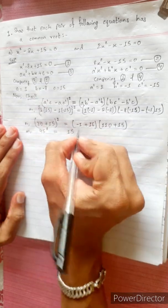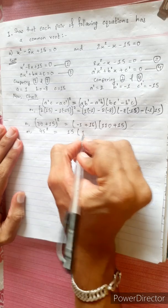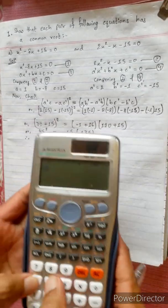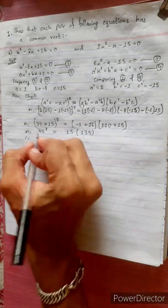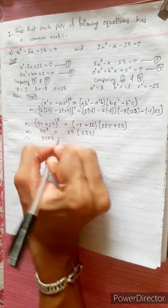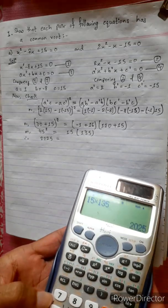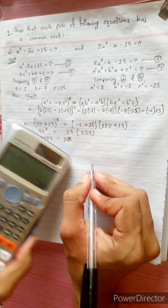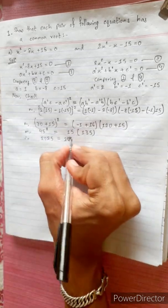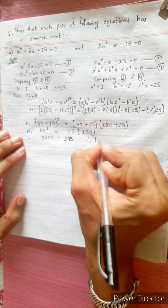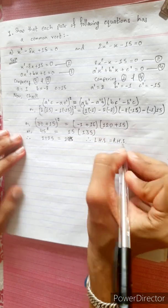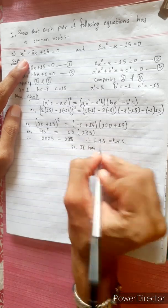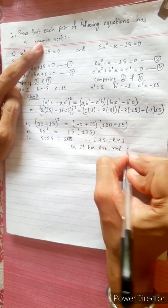So minus 45 squared equals 2025. And 2025 equals 15 into 135 equals 2025. Therefore LHS equals RHS, so the two equations have one root in common.